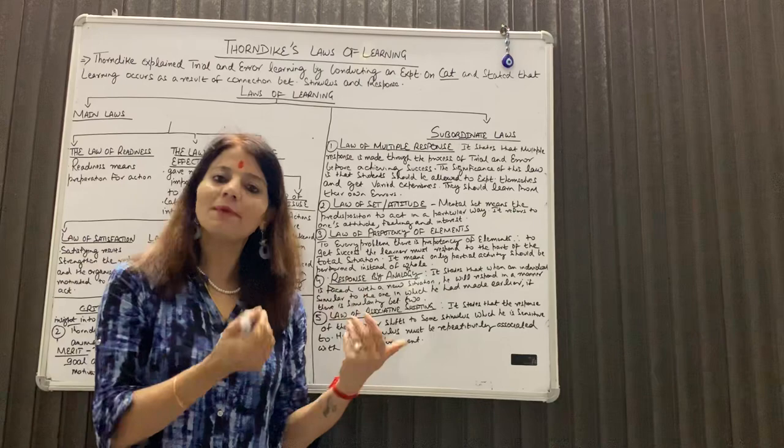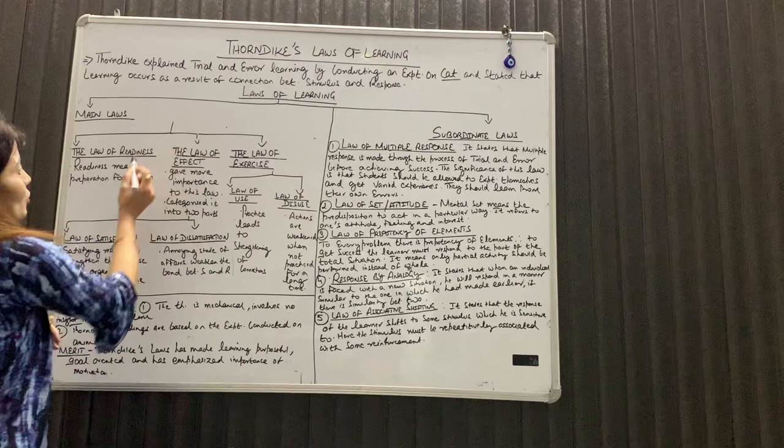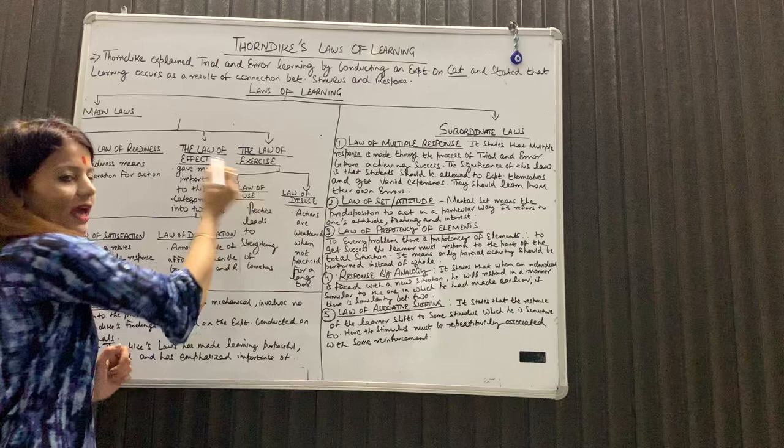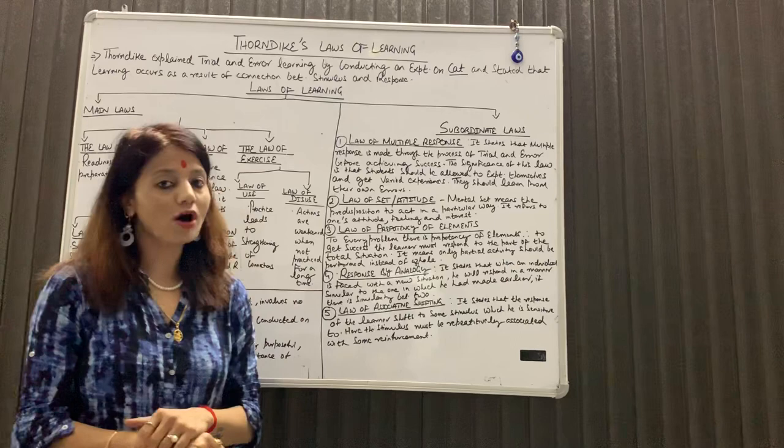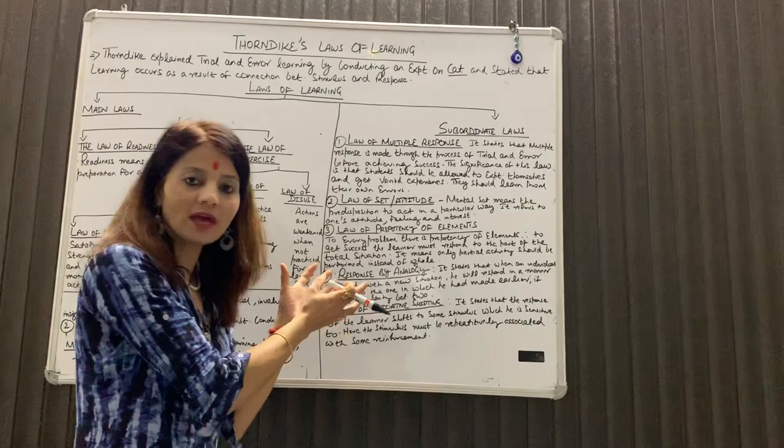यह तो हो गए हमारे तीन laws — primary laws में उन्होंने तीन बताए थे: the law of readiness, the law of effect, and the law of exercise. अब मैं आती हूँ next category में, जिसको उन्होंने subordinate laws या secondary laws का नाम दिया था. यह सारे laws इन्हीं primary laws से निकले हुए हैं.